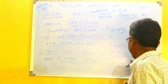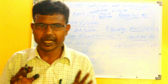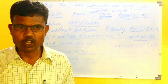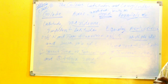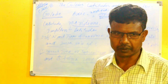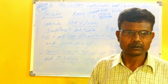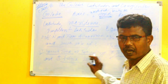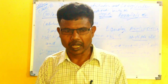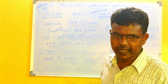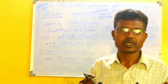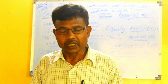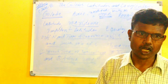The second zone is the temperate zone. There are two temperate zones: the north temperate zone and the south temperate zone. The north temperate zone lies between the Tropic of Cancer and the Arctic Circle, and the south temperate zone lies between the Tropic of Capricorn and the Antarctic Circle. Since these zones receive slanting sun rays, they are neither too hot nor too cold.